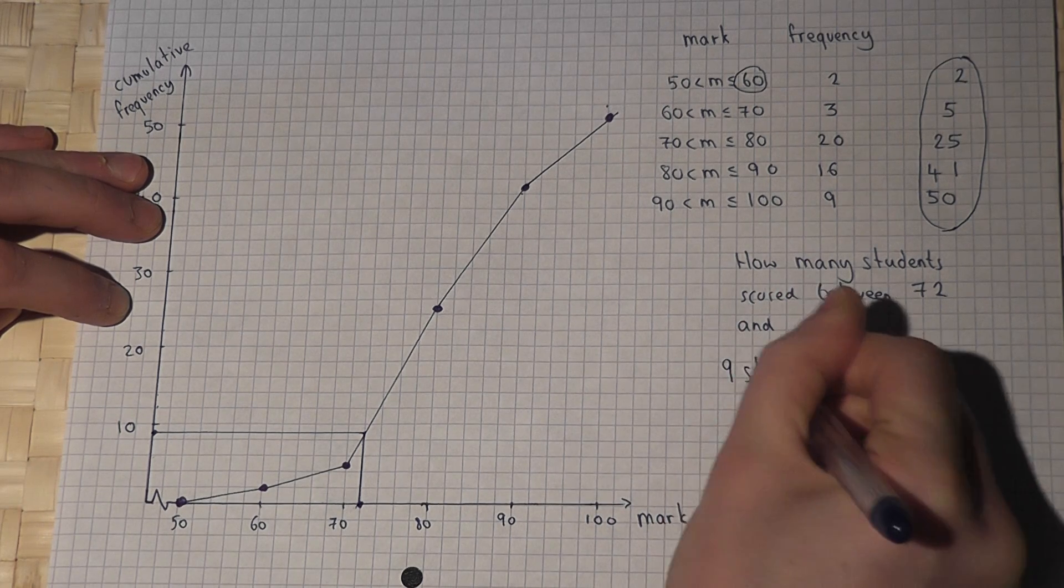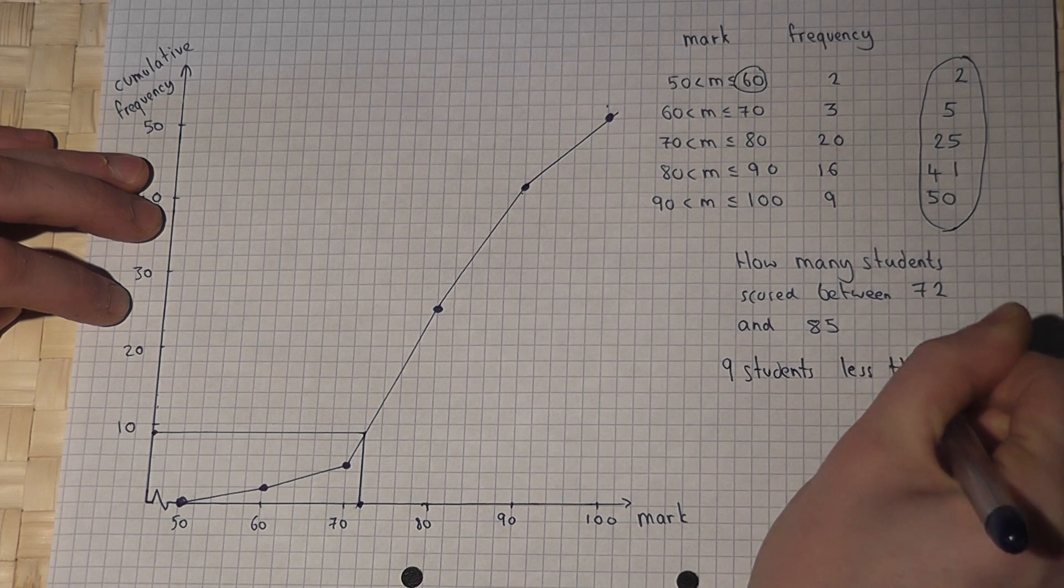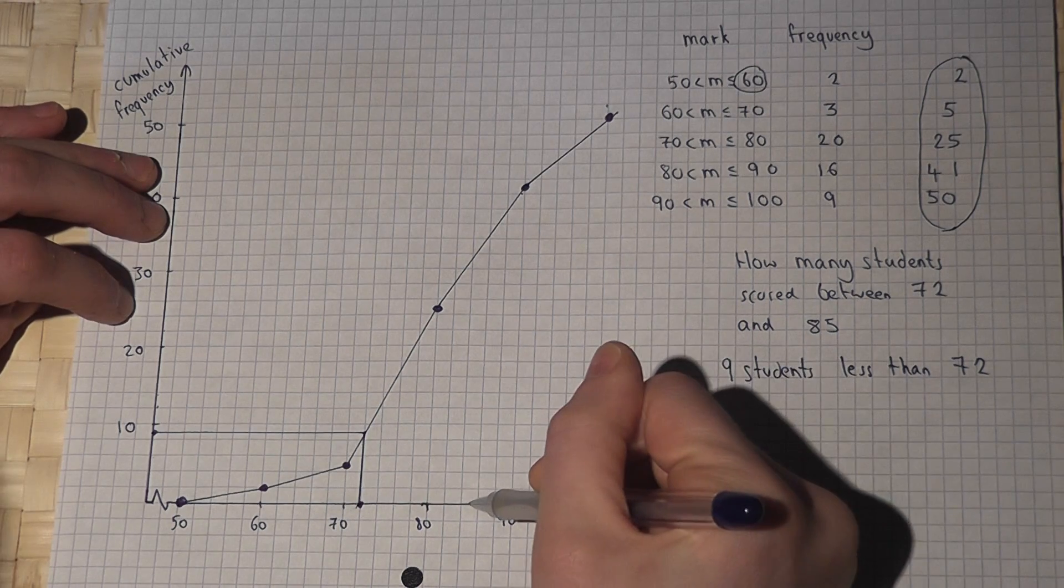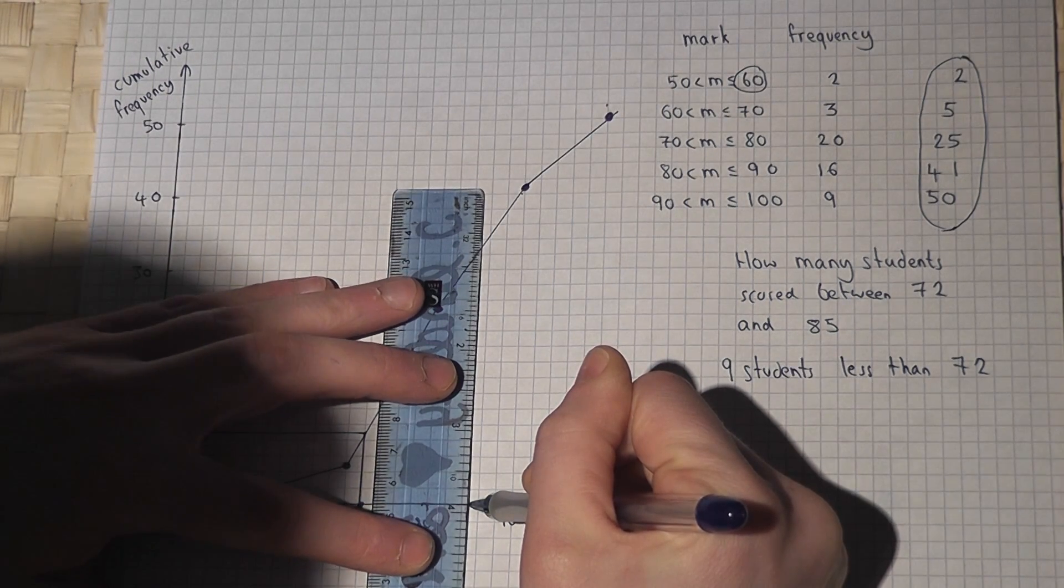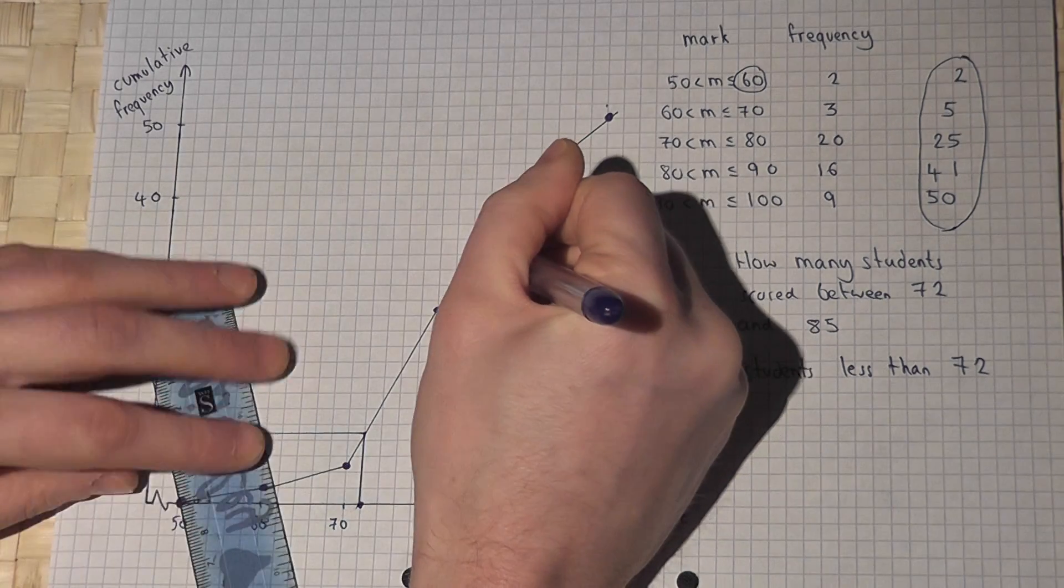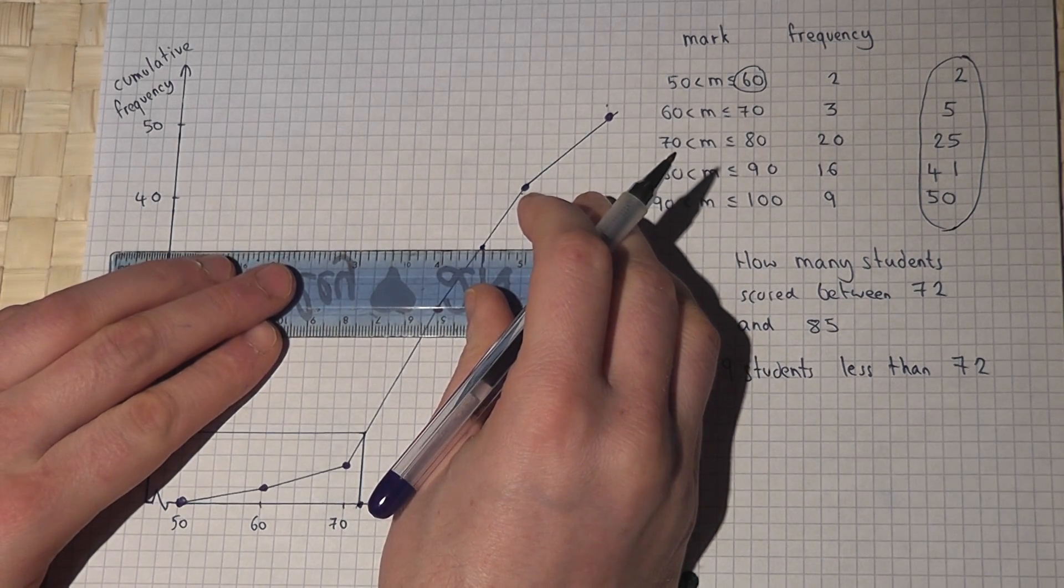So 9 students scored less than 72. So if I then go up to 85 instead up to the graph and this goes up to here. It's important to draw this in the exam as well nice and clearly these lines and across to the y-axis.